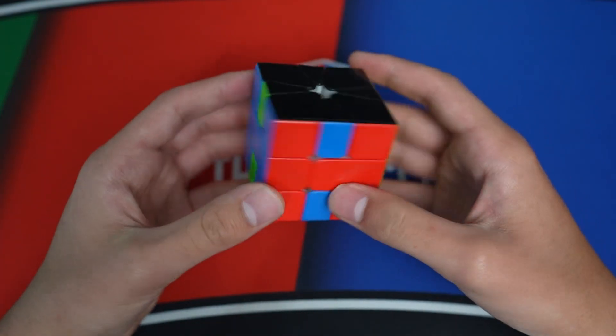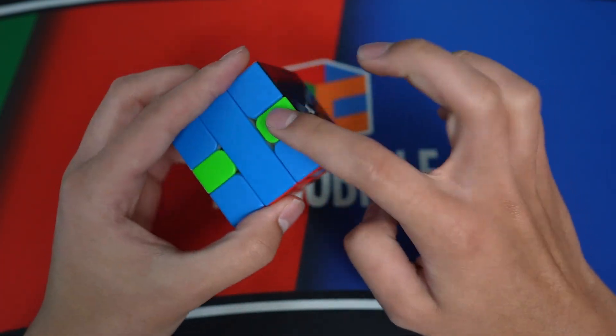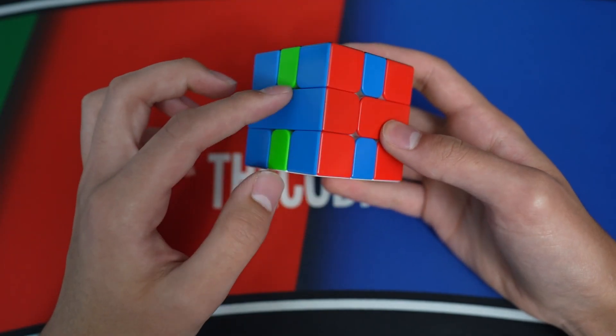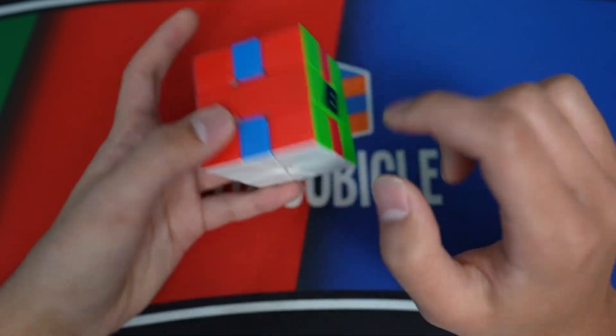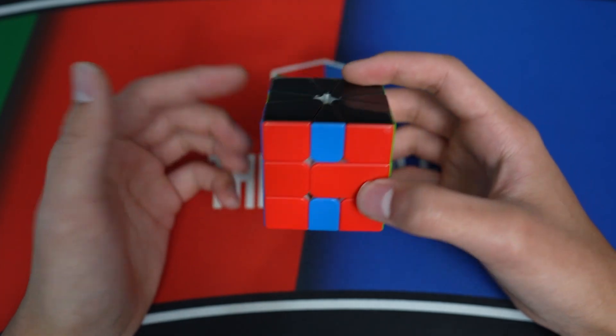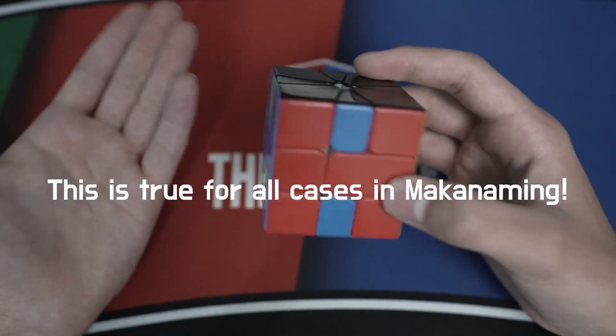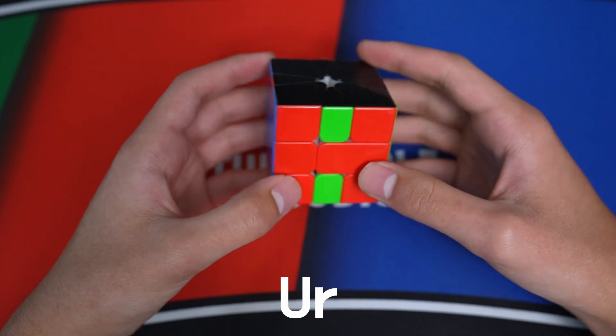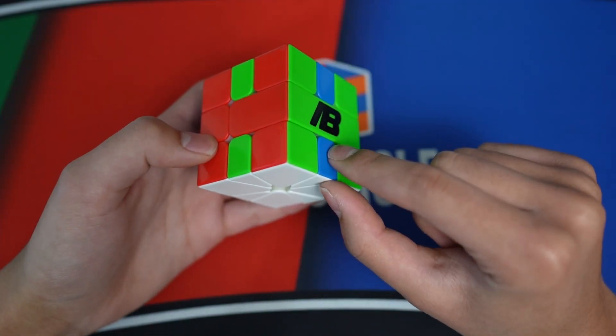Starting with U perms, this would be called UL because the edges are going to the left and the opposite headlight is on the left. So, this is UL, UL. It doesn't change whether it's on the top or the bottom. It looks the same, so it's the same case. And here would be UR because the edges are going to the right and the opposite headlight is on the right.